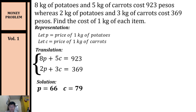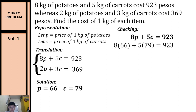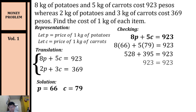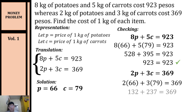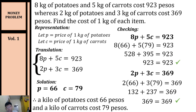Now that we have our solution, it is necessary to check if it satisfies our equations. Substituting into the first equation: 528 + 395 = 923 — yes, it satisfies our first equation. For the second equation: 132 + 237 = 369 — yes, it satisfies our second equation. Therefore, a kilo of potatoes costs 66 pesos and a kilo of carrots costs 79 pesos.